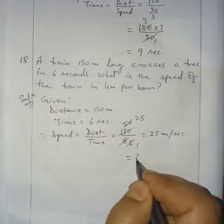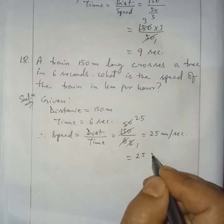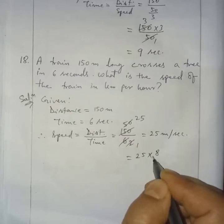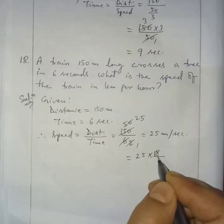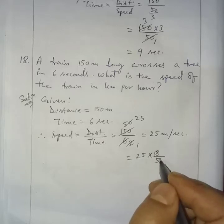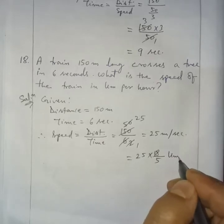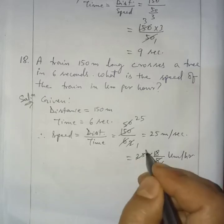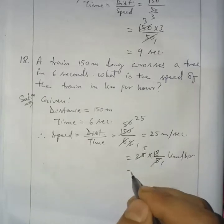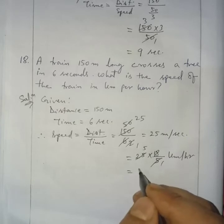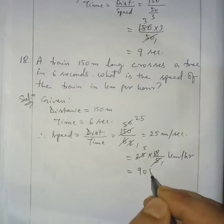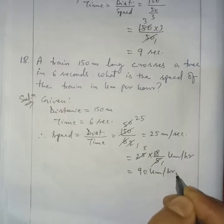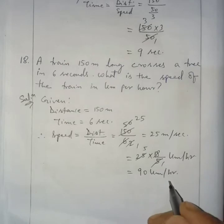Now we convert 25 meters per second to kilometers per hour by multiplying by 18 by 5. So 25 multiplied by 18 by 5 gives 18 times 5, which equals 90 kilometers per hour.